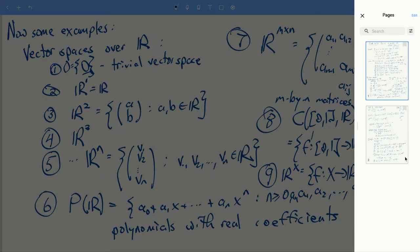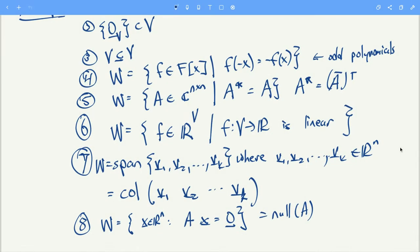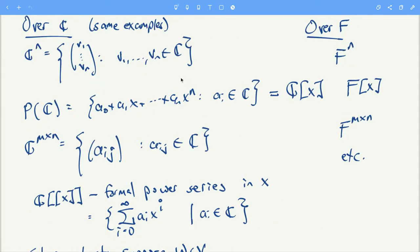Now, those are all vector spaces over the real numbers. Well sure, you can just, a lot of these you can just change the R to a C or a different field and you get more examples. You can just change the R with a C. You have the n-tuples of complex numbers, you have polynomials with complex coefficients. Another name we give for polynomials is C with square bracket x in square brackets.